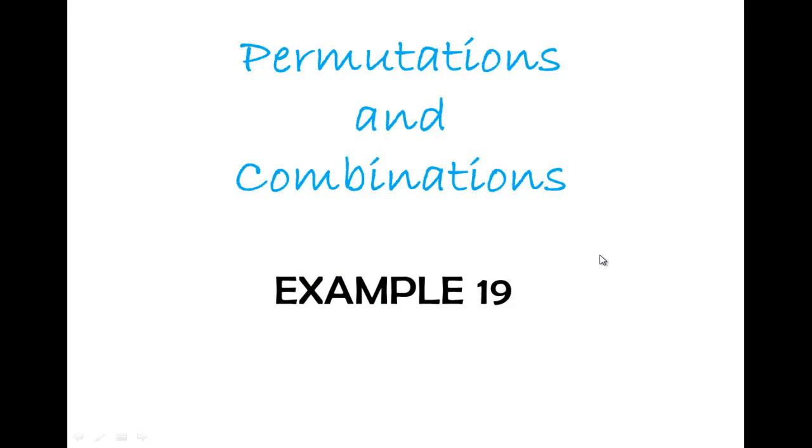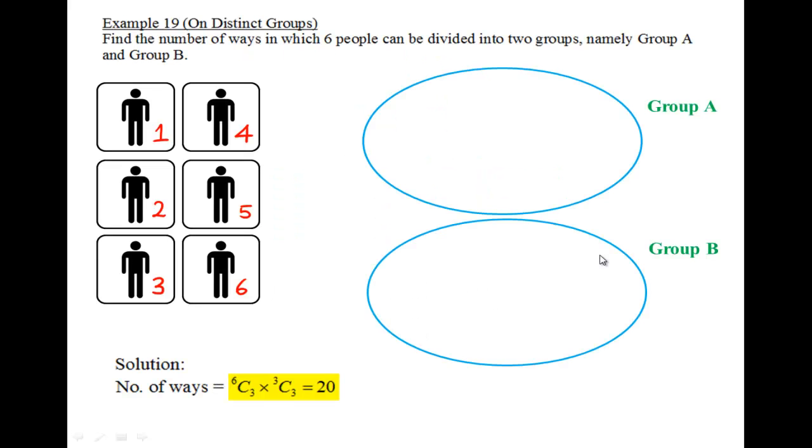Alright, let's discuss our Example 19. Example 19 talks about distinct groups, which is different from the identical groups that we saw in Example 18. In this question, they want us to find the number of ways in which six people can be divided into two groups, namely Group A and Group B.